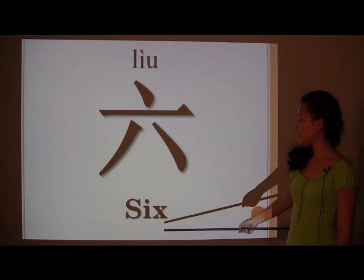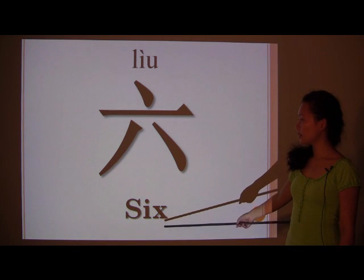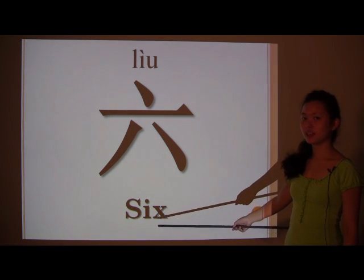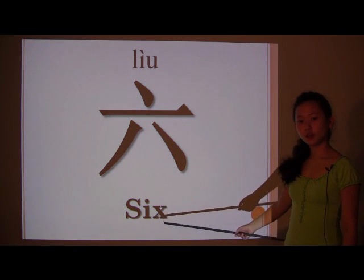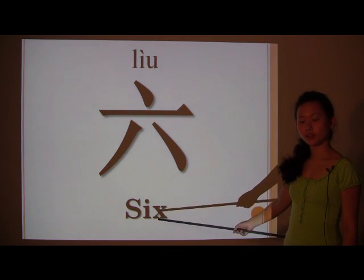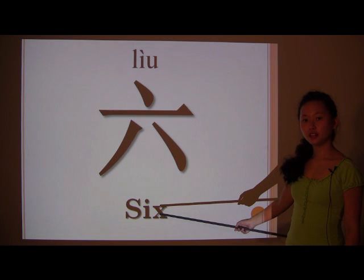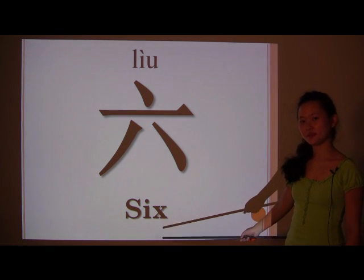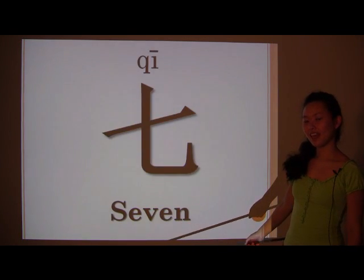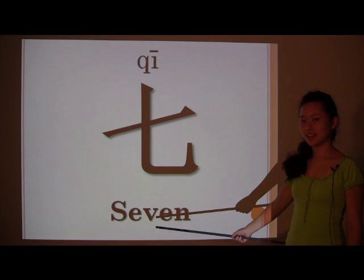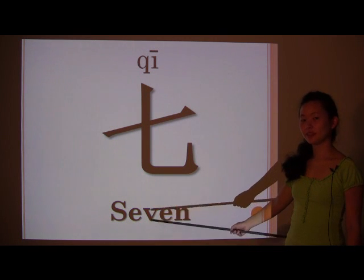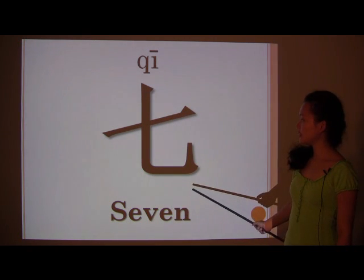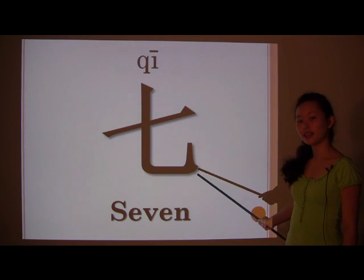Next you have 6 — 六 (LIÙ). 六 for 6. And 7 — 七 (QĪ). 七 for 7.